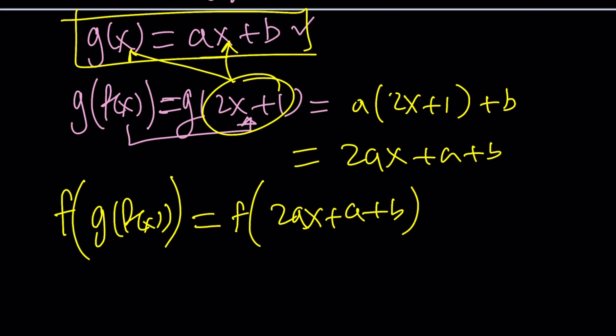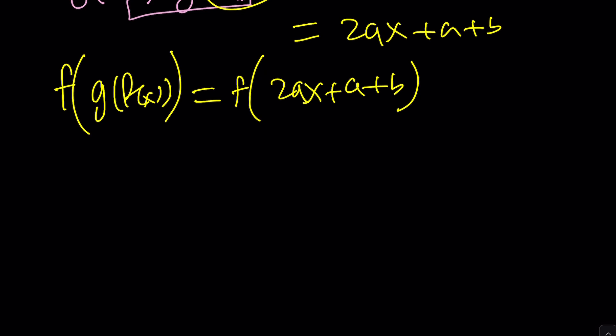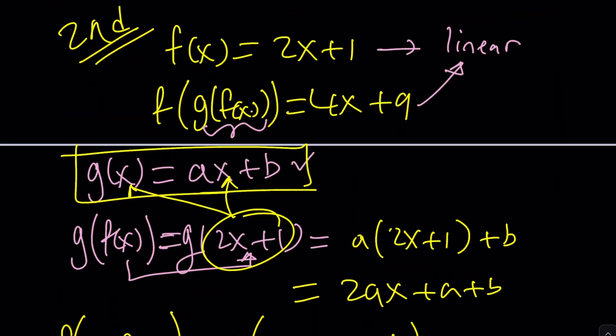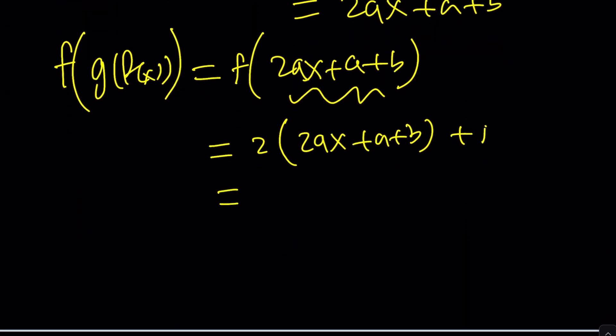Now we do need f(g(f(x))), right? And we know that this is equal to 2ax + a + b. We also know what f of something is, because f(x) is giving us 2x + 1. So this is our input, 2 times that. Let me write it here. So f of something is 2 times the input. Make sense? Plus 1. But guess what? It's given, f(g(f(x))) is given as 4x + 9, so we can now go ahead and set it equal to 4x + 9.